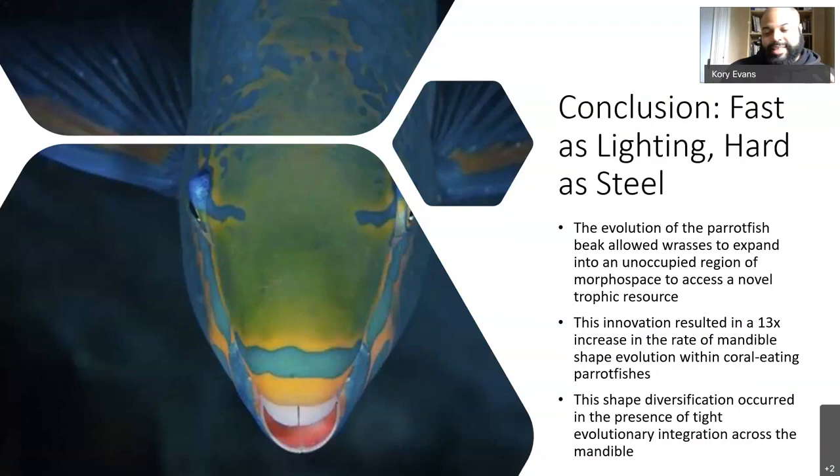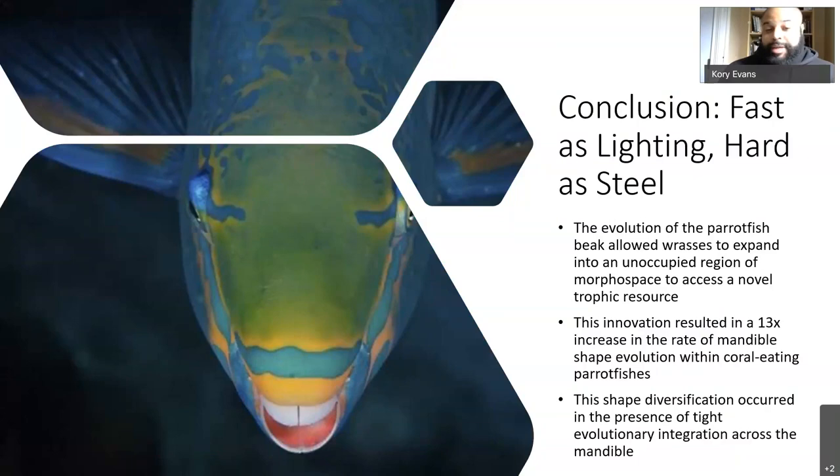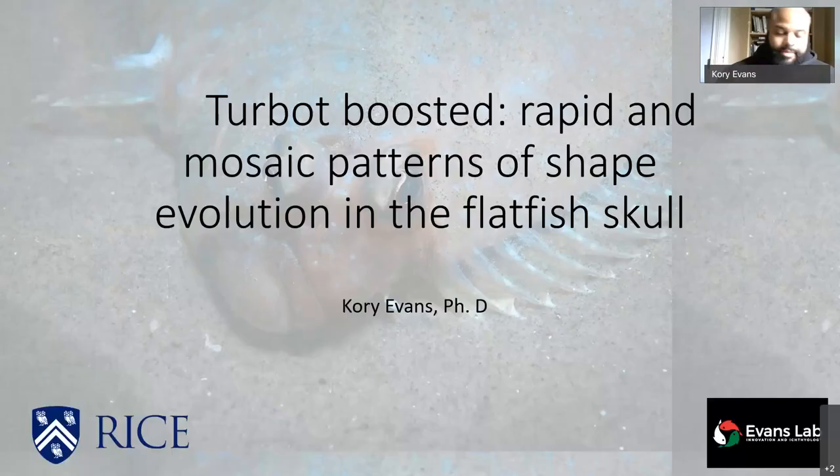To conclude this part, the evolution of the parrotfish beak allowed wrasses to colonize a novel region of morphospace — and they did it 13 times faster than the background rate. When we looked at patterns of integration across the skull, the parrotfish beak was highly integrated, which is pretty impressive and pretty surprising.